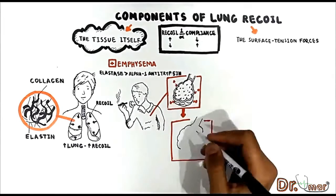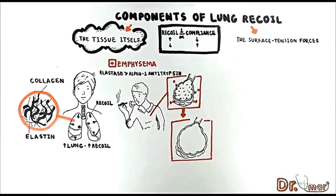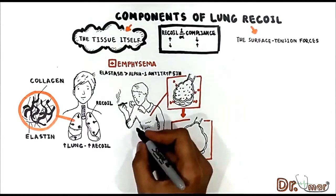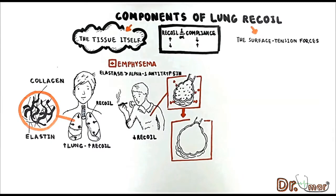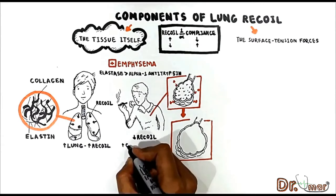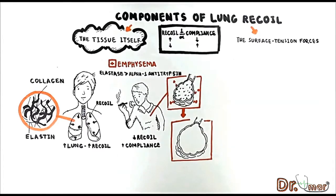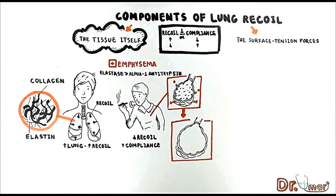The airspaces enlarge because of air trapping. In addition, elastic recoil decreases because of elastin destruction by elastase. As a consequence, the lung will be easily stretched and compliance increases. This is the reason why patients with any type of obstructive pulmonary disease have no significant problem with inspiration; rather they have trouble with expiration.